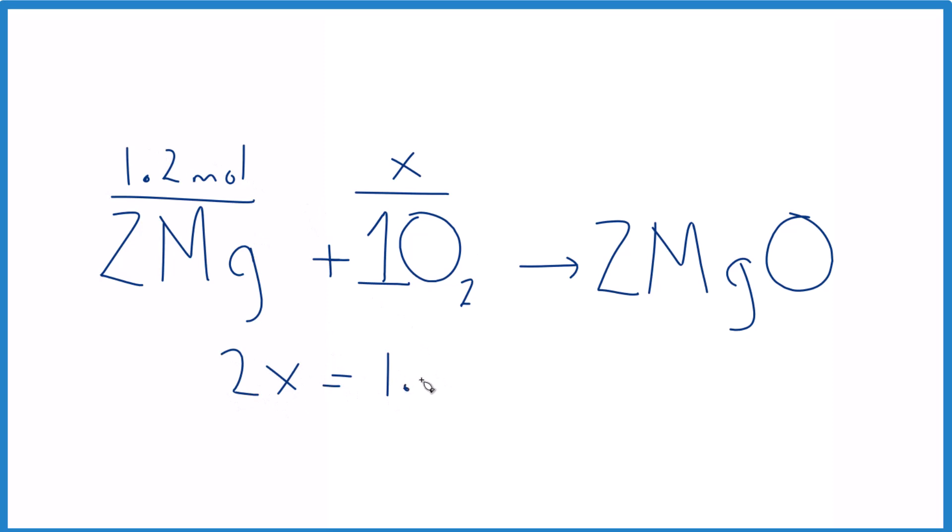So 1.2, divide both sides by 2. Now we're left with X and 1.2 divided by 2 is 0.6 moles. So it's the same thing but now we're just using this ratio here, really using the mole ratio. And if you found MgO it would be 1.2.